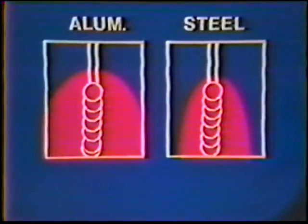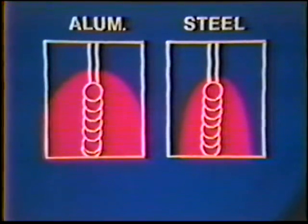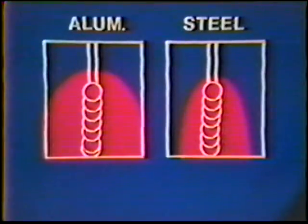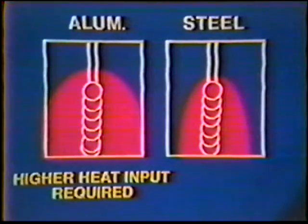Aluminum has a much higher thermal conductivity than low-carbon steel, conducting heat about three to five times as fast as steel, depending on alloy content. Because of aluminum's higher conductivity, a higher heat input is required even though the melting temperature is lower than steel's. On thicker sections of aluminum, an increase in amperage is required to compensate for the rate at which heat is transferred from the arc. Preheating is also sometimes used to reduce heat dissipation.